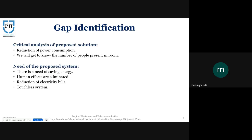Why do we need this system? Firstly, there is a need for saving energy — this system saves electric energy when it is not in use and will also contribute to a reduction in electricity bills. Secondly, human efforts for both switching lights on and off and counting people manually will be eliminated. Also, in this COVID situation, touchless systems are the best option to avoid contamination.